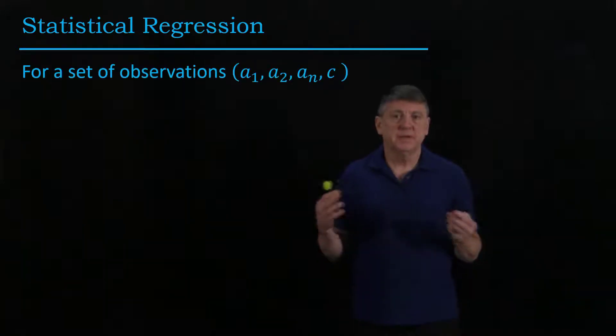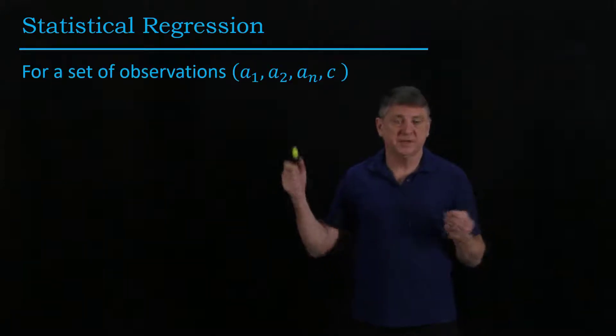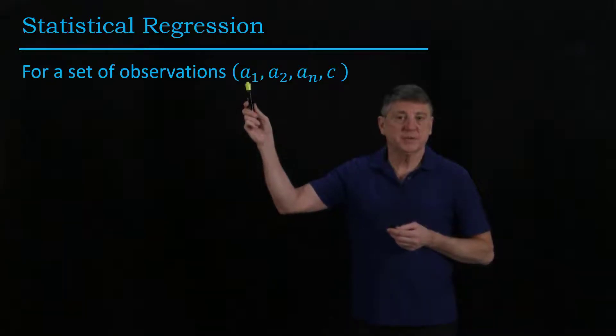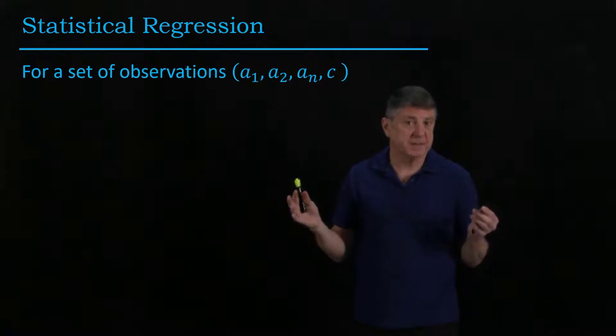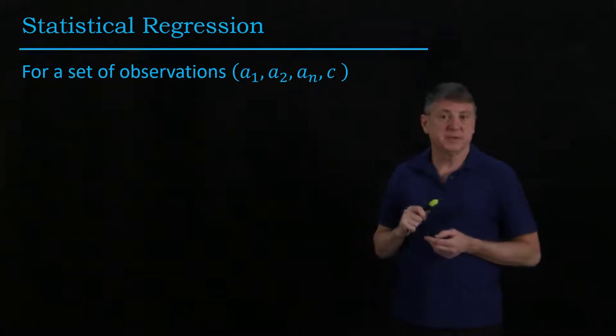Statistical regression begins with a set of observations and we'll draw a distinction. We'll have one through N of these and we'll call them observation type A and then we'll have observation type C.